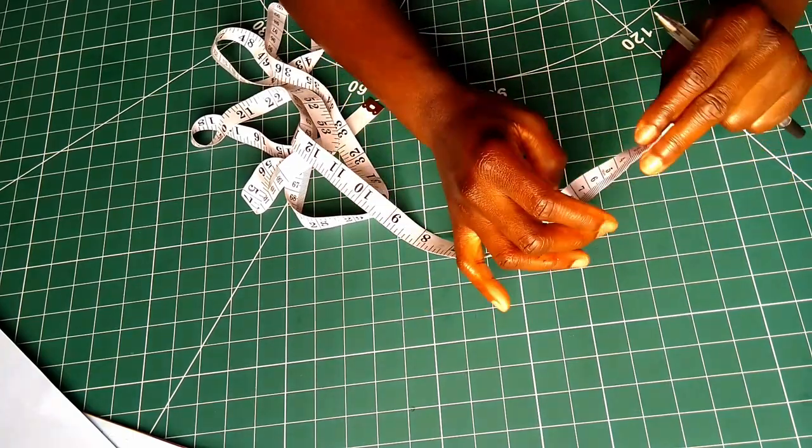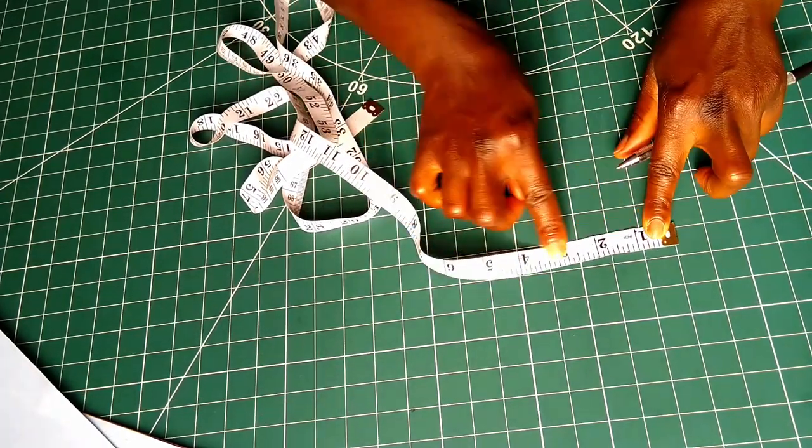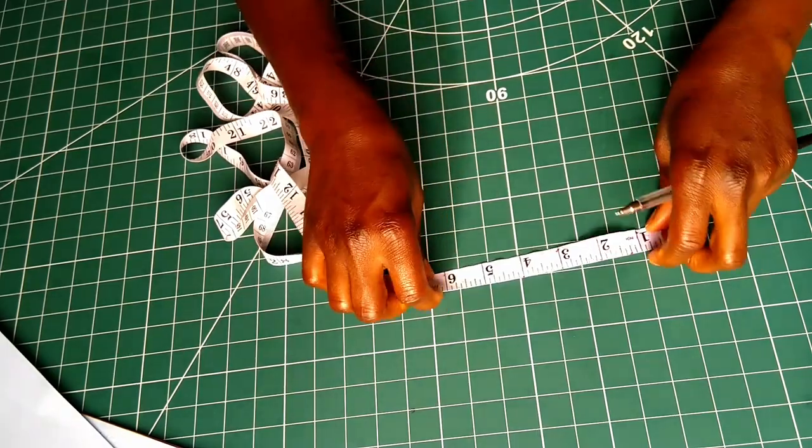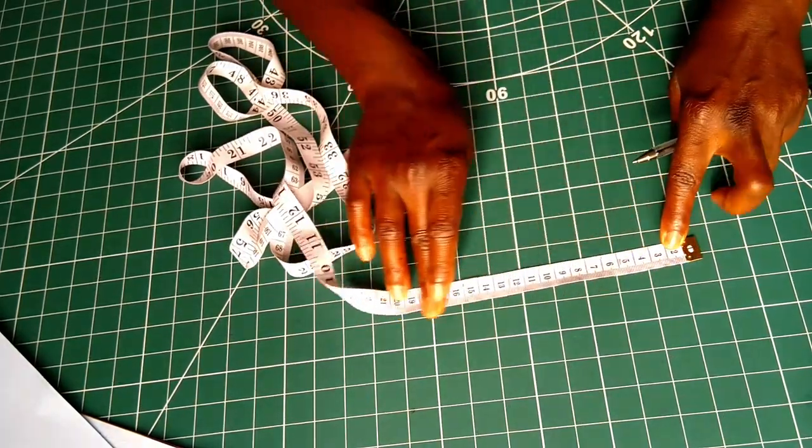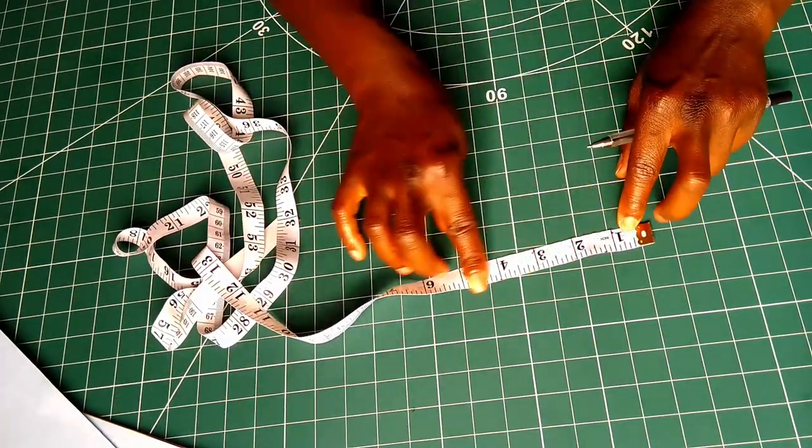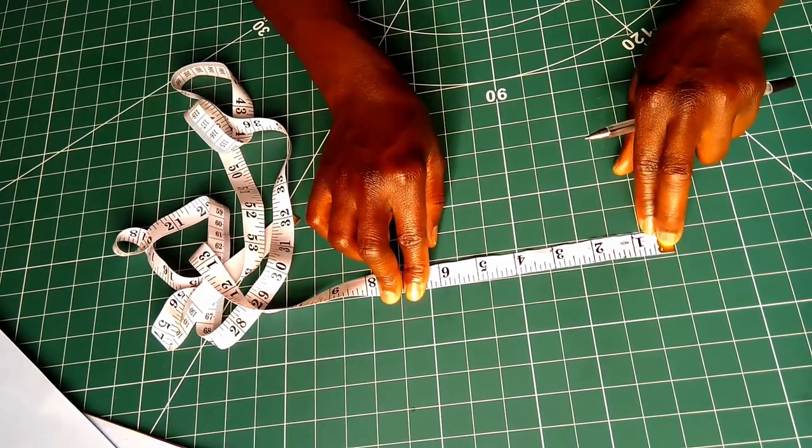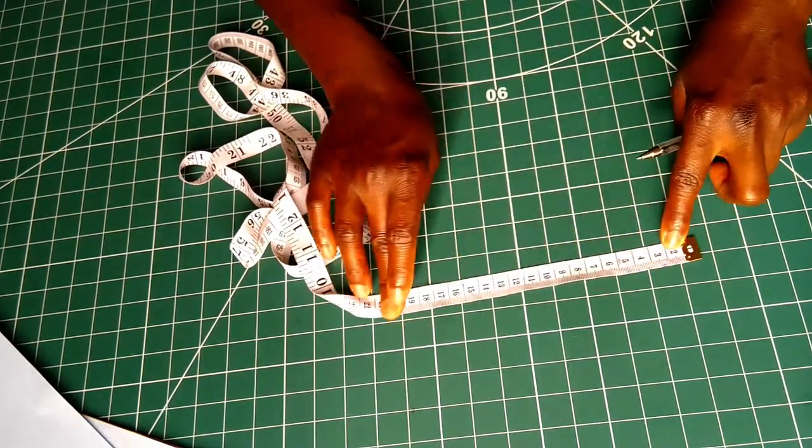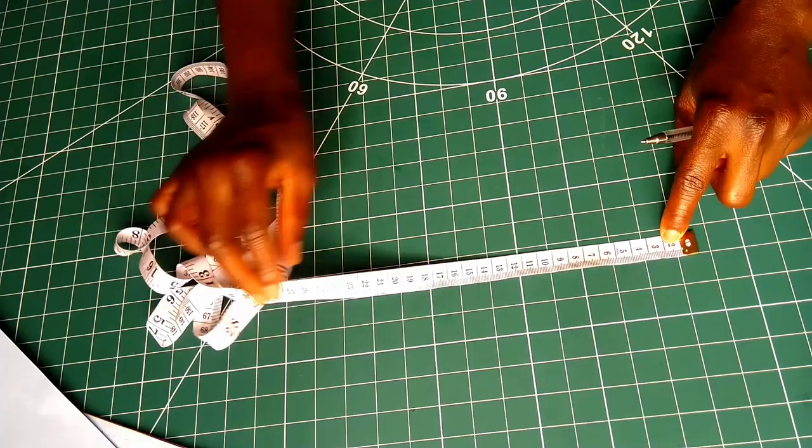There are two main systems for measuring length. We have the imperial system of measurement and the metric system of measurement. The imperial system measures things in inches, feet, and yards. The metric system measures things in millimeters, centimeters, and meters.